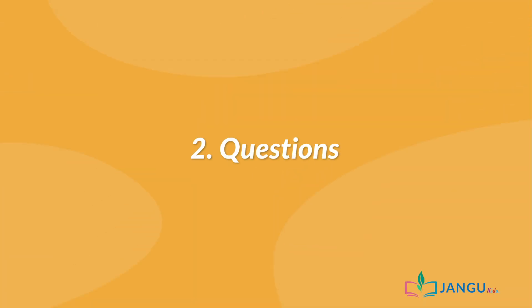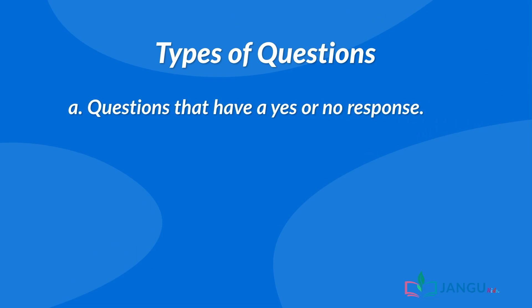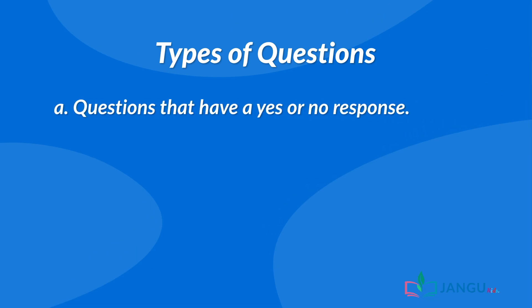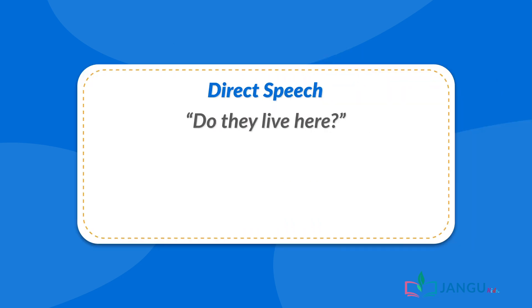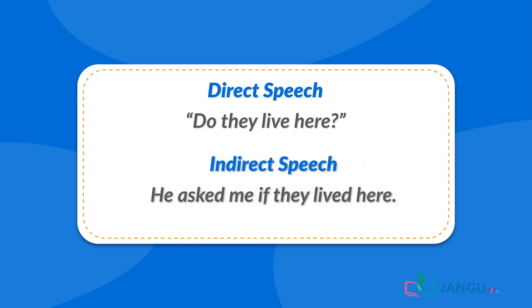2. Questions: When you report a question, you need to change the interrogative form into an affirmative sentence. There are two types of questions that we can report: questions that have a yes or no response, and questions that begin with a question word like what, where, who, etc. When we report a yes or no question, we use 'if.' For example — Direct speech: 'Do they live here?' Indirect speech: He asked me if they lived here.